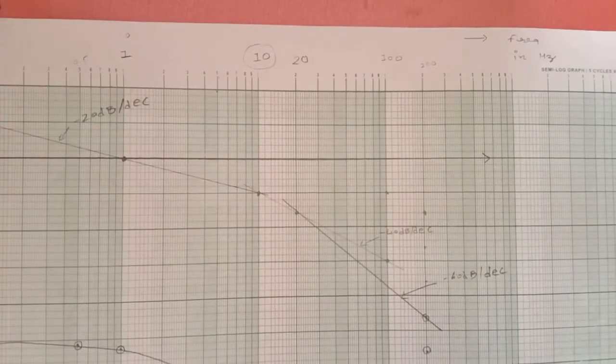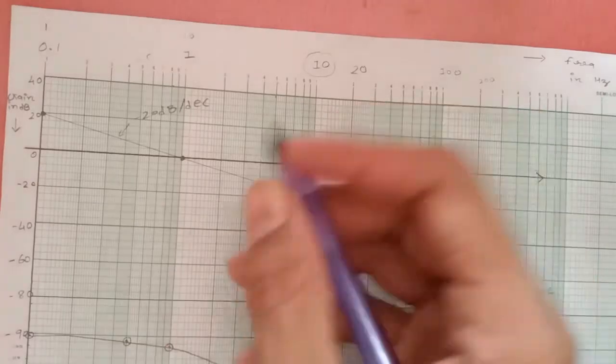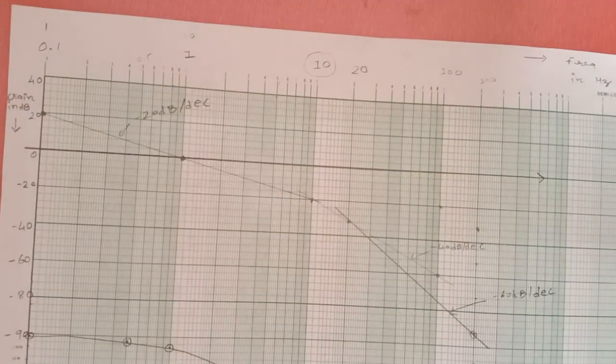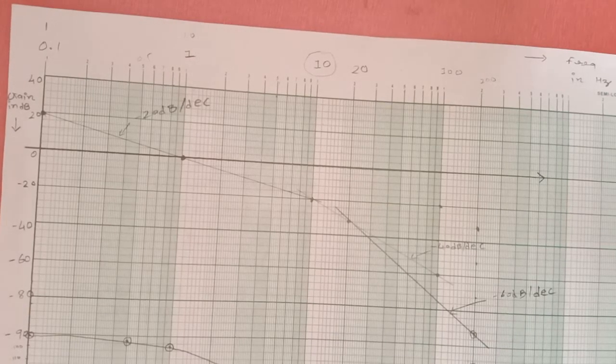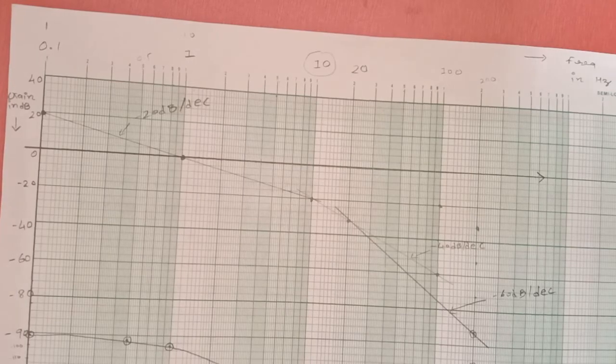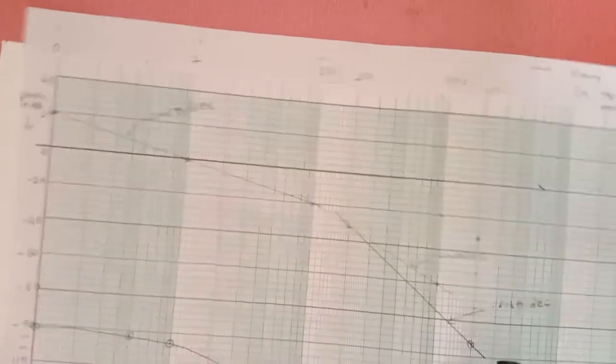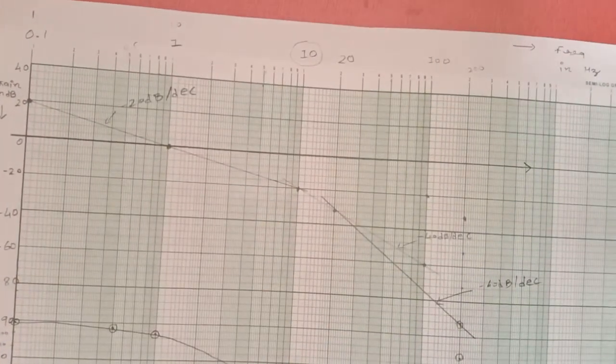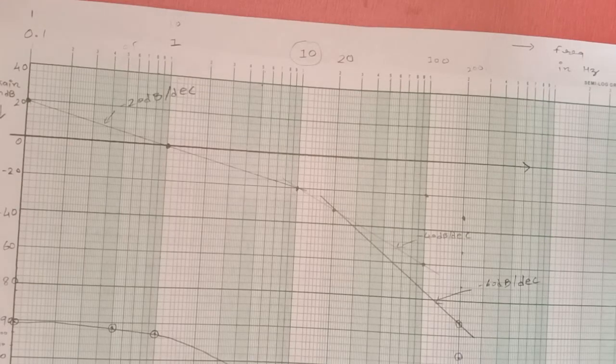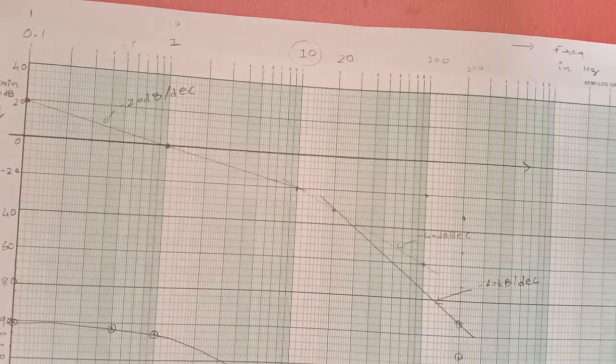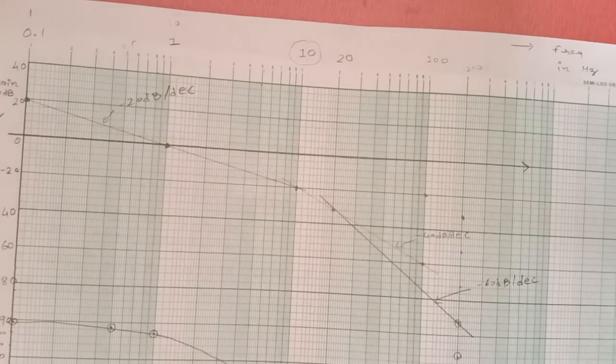Now you might notice that we did not have done the error correction. We have only asymptotic Bode plot. Now how to do error connection on Bode plot. We had done calculation but how to implement that calculation on this Bode plot. And after that we can get the different value of K. If an example does not give an error correction, you can directly find a value of K for different conditions by this asymptotic graph.